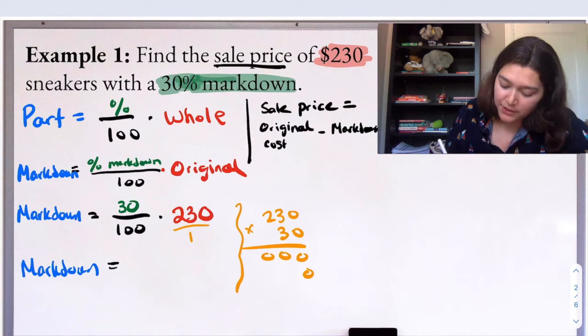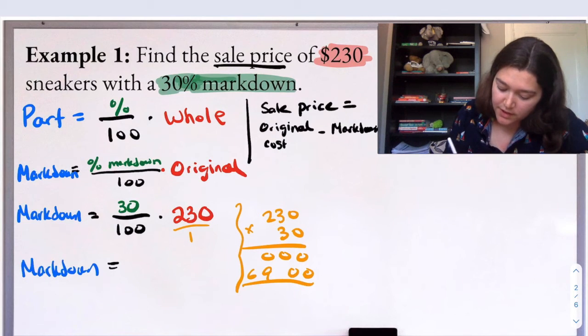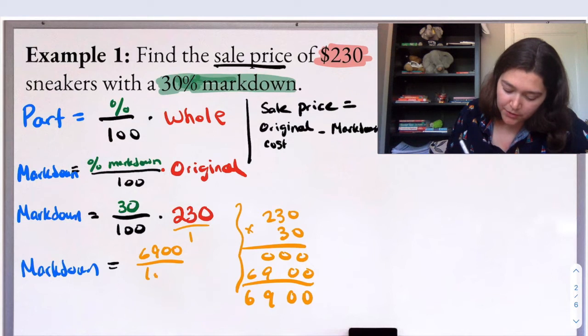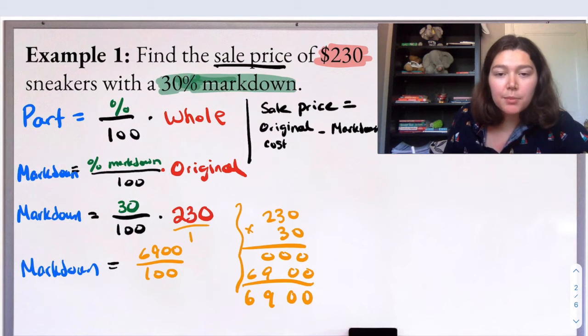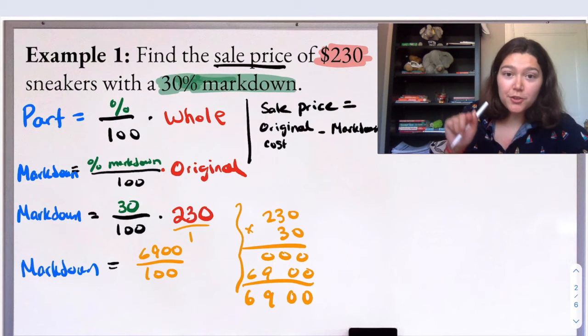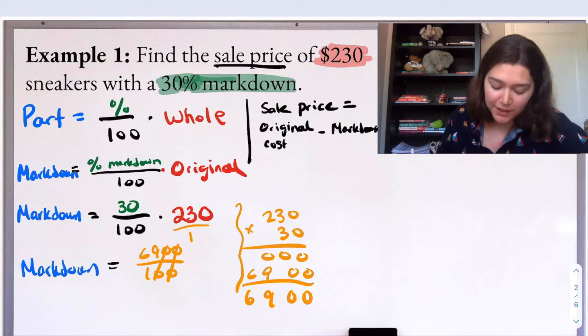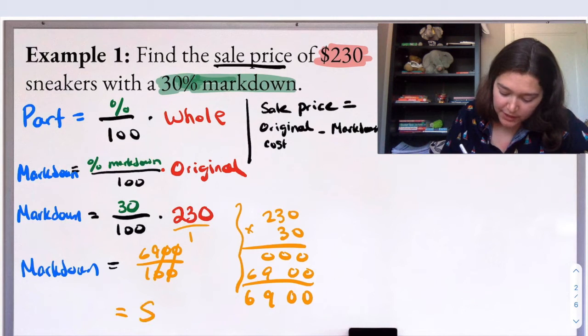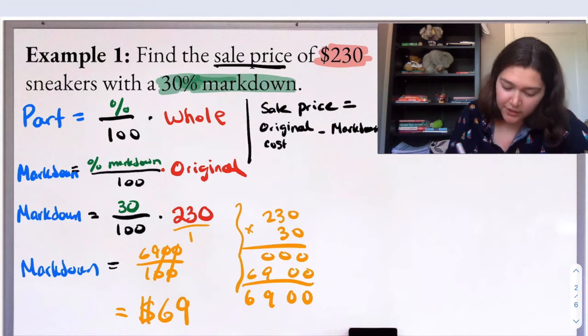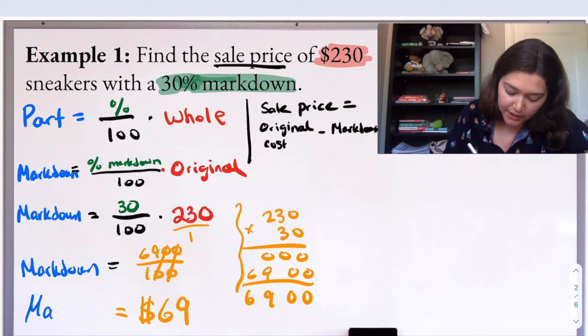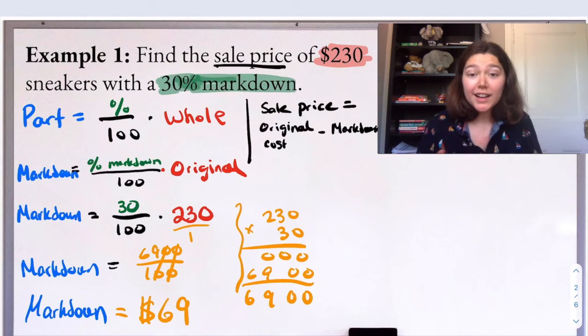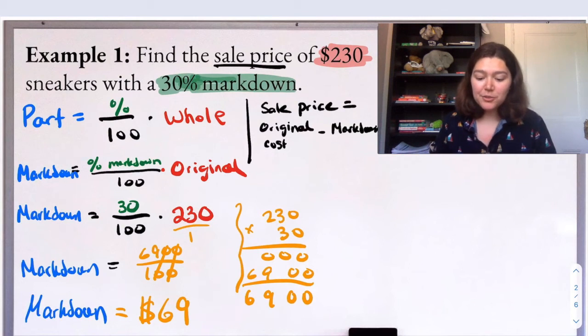We need all the zeros. Three times zero is zero. Three times three is nine and three times two is six. So we'll get 6,900 in the numerator. Then we would divide by 100. When you divide by 100, we're moving the decimal place over two to the left. Or you can see here it's like our zeros are canceling away because we're dividing by the 10s twice. So we get that our markdown is $69. That is the markdown.